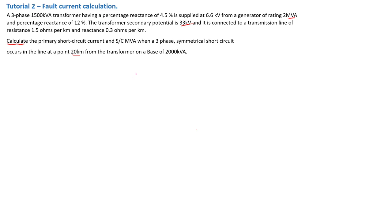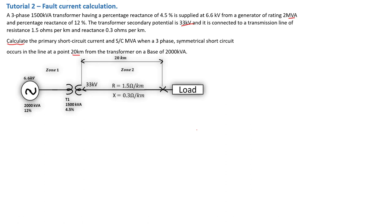The first thing to do is draw the schematic to illustrate the problem. We have a 6.6 kV generator at 2 MVA with 12% percentage reactance, connected to a step-up transformer going from 6.6 kV to 33 kV for the transmission line. The fault occurs at the 20 kilometer point. We need to calculate the short circuit current and short circuit MVA at that point.